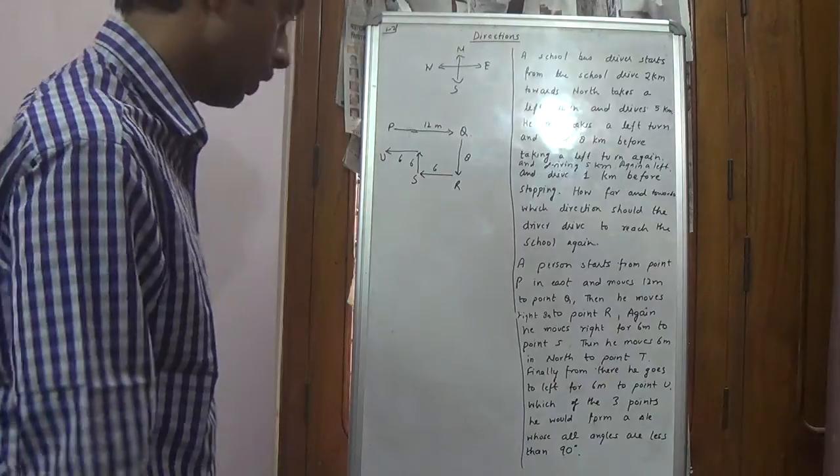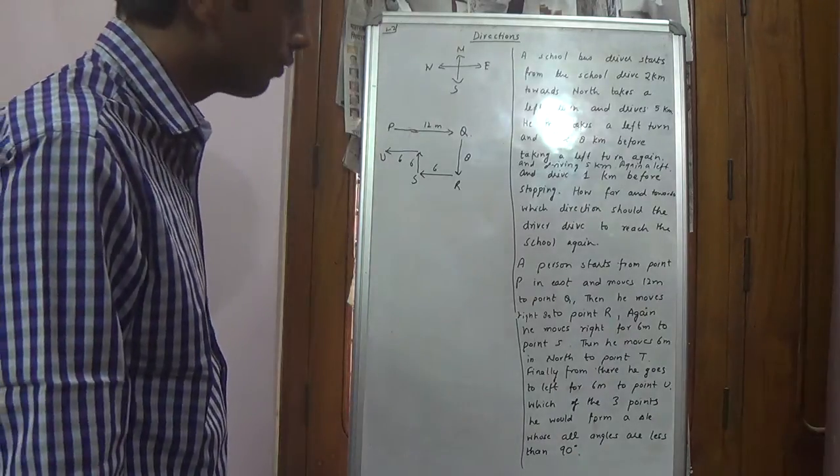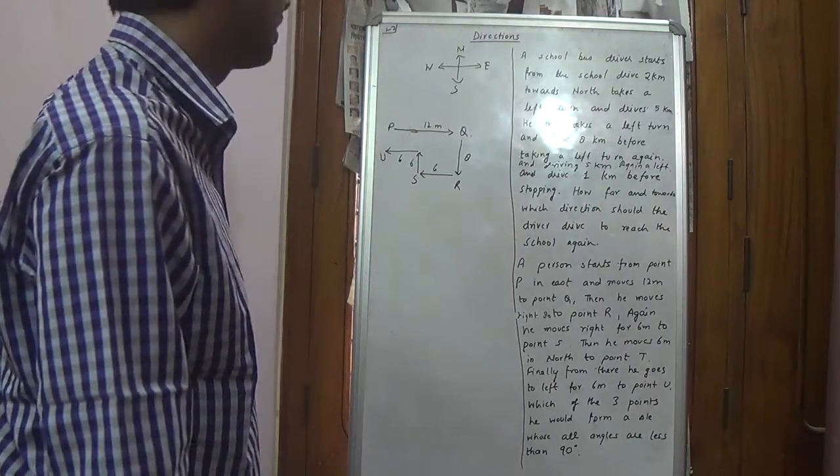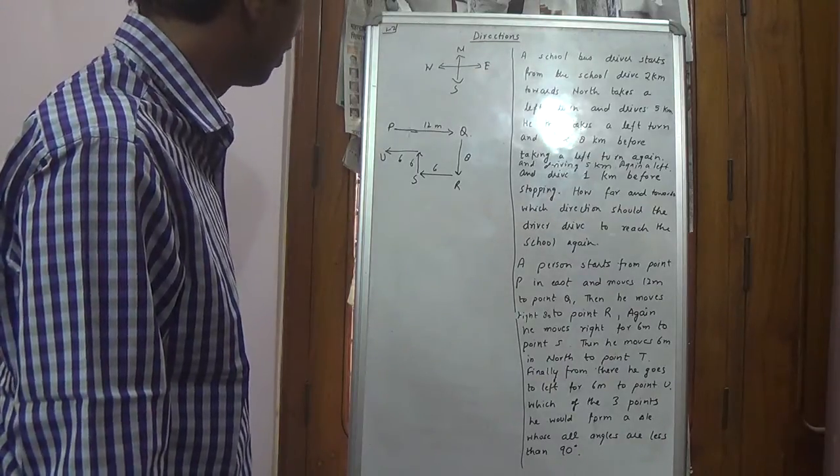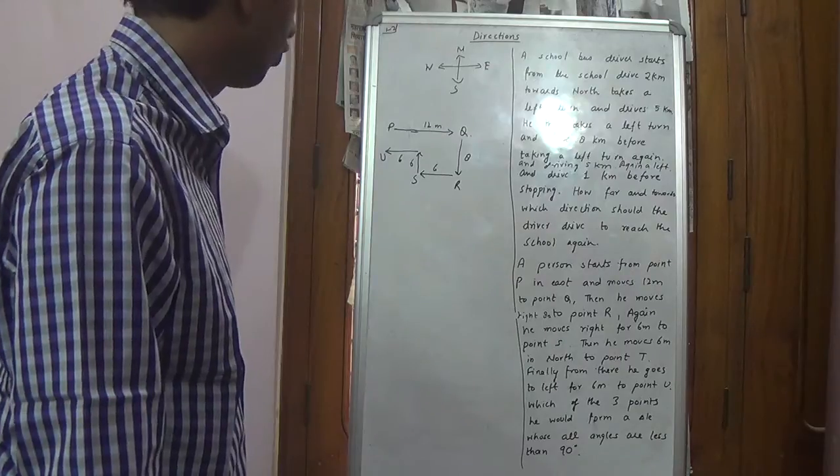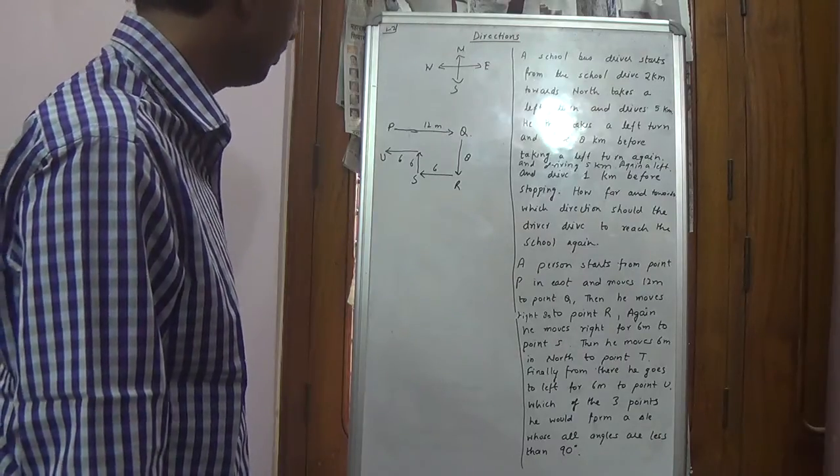Now, which of the 3 points would form a triangle whose angles are less than 90 degrees? We have to take 3 points where the triangle formed has angles less than 90 degrees.